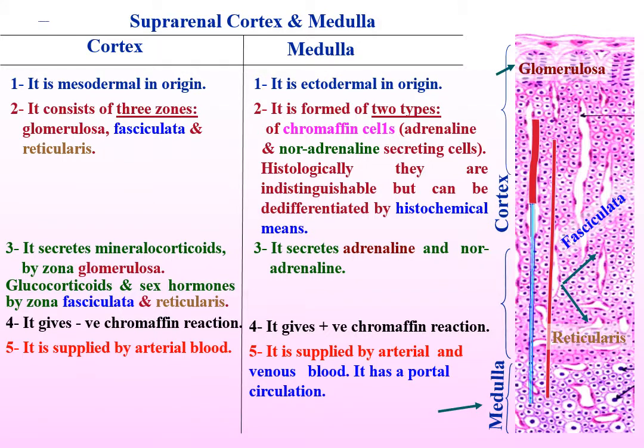Suprarenal cortex is supplied by arterial blood, while suprarenal medulla is supplied by both arterial and venous blood — it has a portal circulation. Suprarenal cortex is essential for life, while suprarenal medulla is not essential for life.